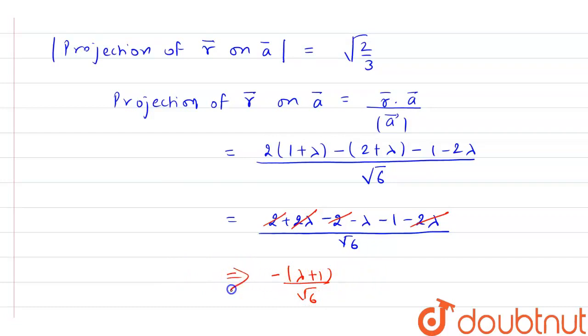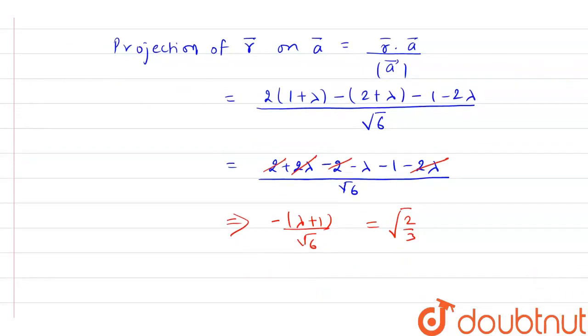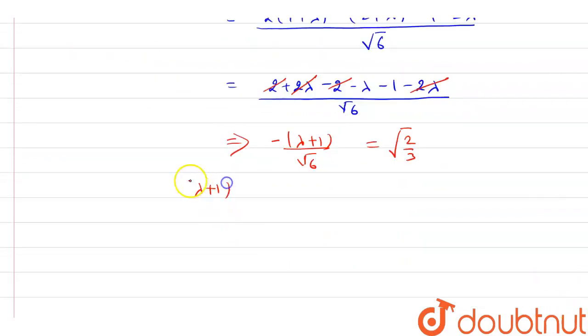So the magnitude is equal to square root 2 by 3. Now if I square both sides then we will get lambda plus 1 whole square by 6 equals to 2 by 3. Now this will cancel out by 2.